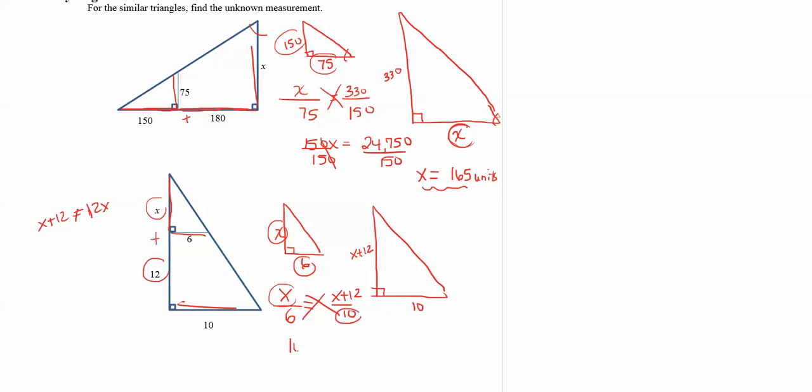Multiply diagonally. So I have x times 10 which is 10x equals 6 times x plus 12. Now with 6 times x plus 12 you do need to distribute that 6 and multiply both terms by 6. So that gives us 6x plus 72.